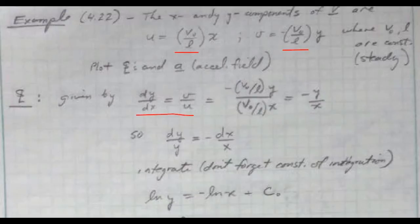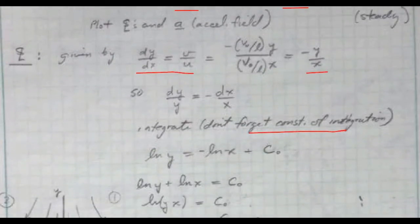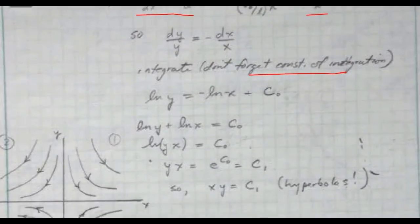And so in this case, that simply cancels out most of the stuff, and we end up with the expression that the derivative dy/dx is equal to minus y over x. So we can separate that and integrate. Don't forget the constant of integration, because that gives us our family of streamlines. So we have ln y is equal to the negative ln of x plus a constant.